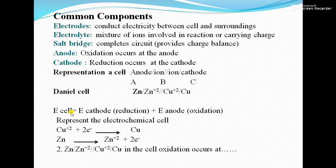Next is the EMF of the cell. It can be found using: E = E_cathode + E_anode, where E_cathode corresponds to the reduction at the cathode and E_anode corresponds to the oxidation at the anode.